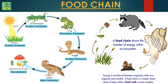A food chain shows the transfer of energy within an ecosystem. Energy is transferred between organisms when one organism eats another. A food chain is a simple linear series of steps, while a food web is more complex.